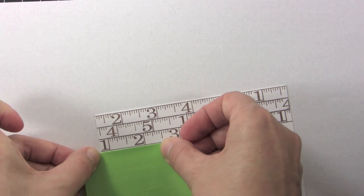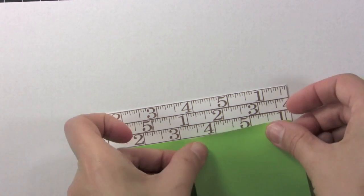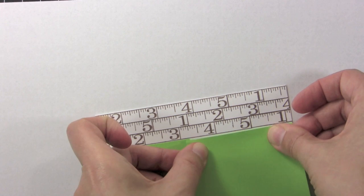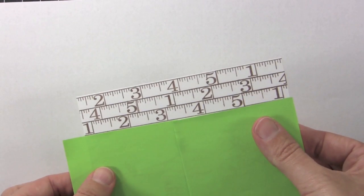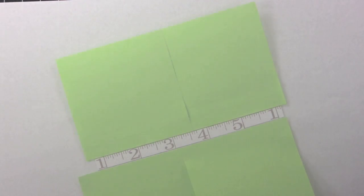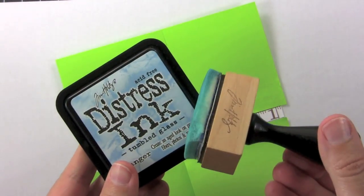You just want to take the post-it note and mask off the area that you want to be a certain color. So first I'm going to mask off the ruler on the right so that we can make it tumble glass. That's the pretty blue distress ink.